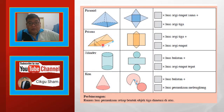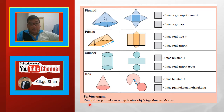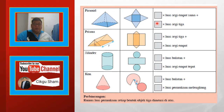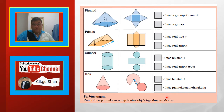Seterusnya piramid, prisma, selinder dan kon. Akhir sekali daripada apa yang awak dah isi ni, berapa ni kan, dan kita boleh buat perbincangan — apakah rumus luas permukaan bagi setiap bentuk geometri 3 dimensi di atas?